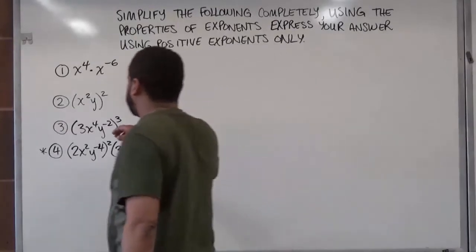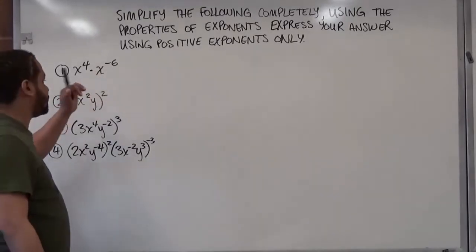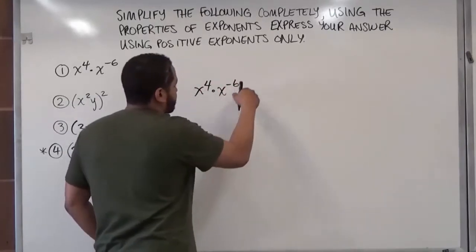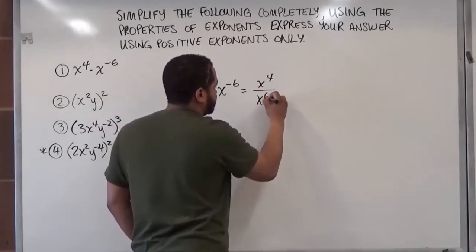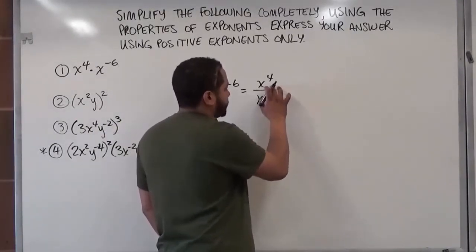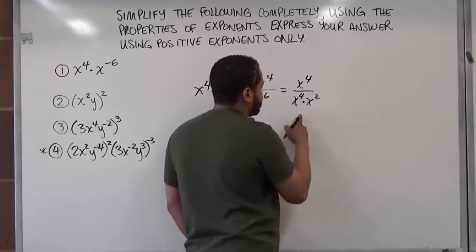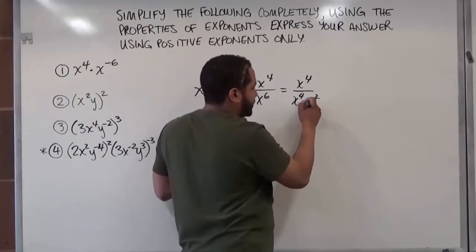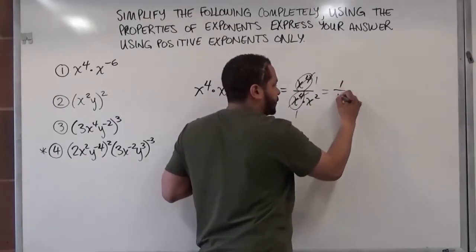We have x to the fourth power multiplied by x to the negative sixth power. We know negative exponents have to move to the denominator. So we move the exponent to the denominator and get x to the fourth over x to the sixth. Now we just have to simplify. If we factor the denominator with the common factor of the numerator, we get x to the fourth over x to the fourth times x to the second — because there are six x's multiplying, separated into four times two. These reduce to give us one over x squared.